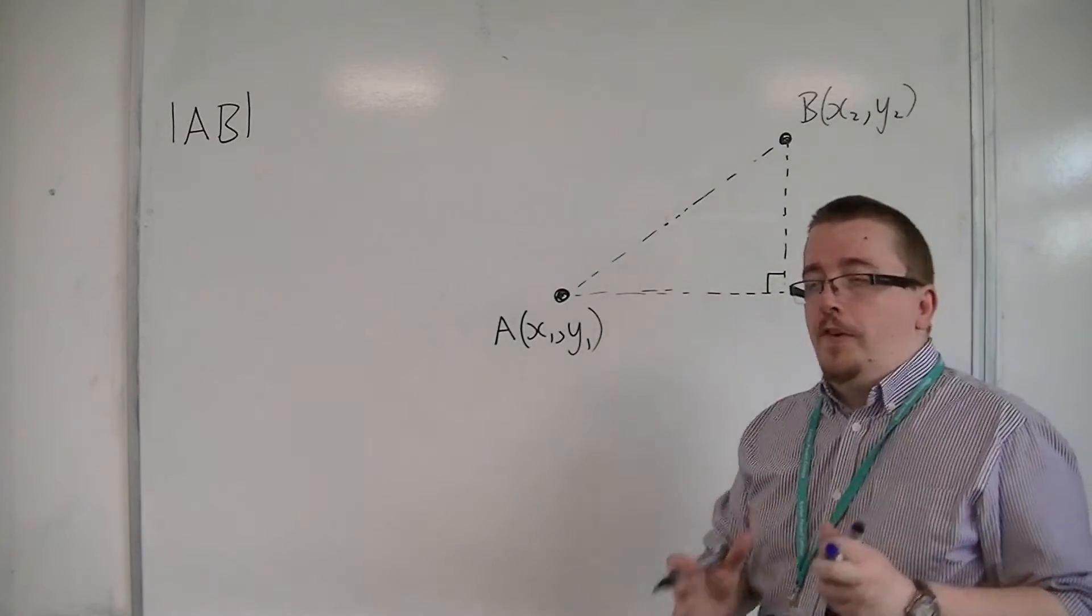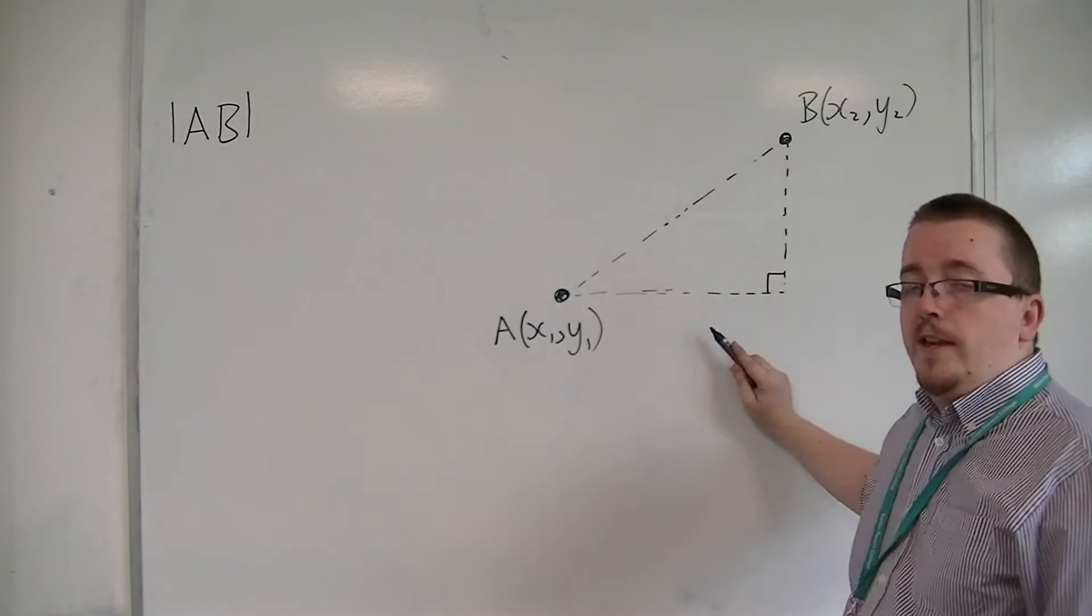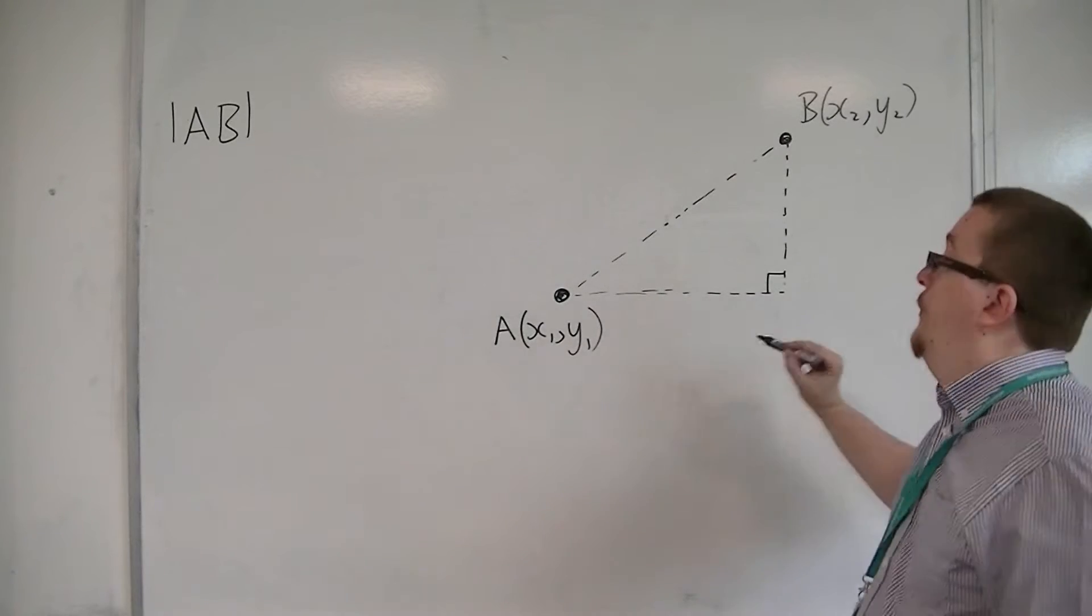So in order to find the length, we're going to have to find the length of a hypotenuse of a right-angle triangle. So that would be using Pythagoras' theorem.